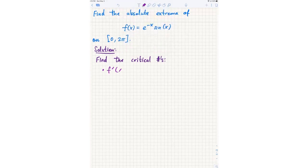Remember, there are two types. Where does f prime not exist? That gives us nothing, right? Each of these functions is differentiable. And now let's set the derivative equal to 0.